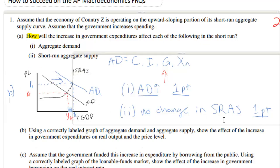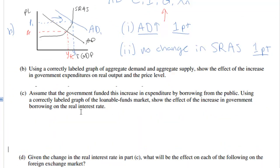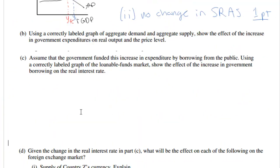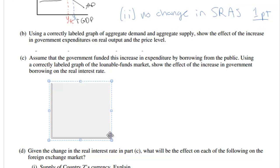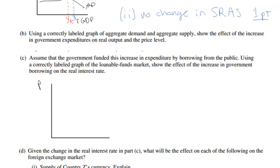Part C says: assume that the government funded this increase in expenditure by borrowing from the public. Using a correctly labeled graph of the loanable funds market, show the effect of this increase in government borrowing on the real interest rate. The loanable funds diagram is a very commonly asked about diagram on the macro FRQ section. The vertical axis shows the real interest rate, labeled IR with a little r for real, and the horizontal axis shows the quantity of loanable funds.